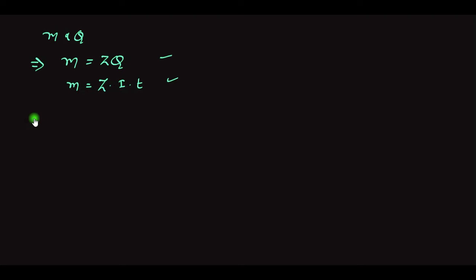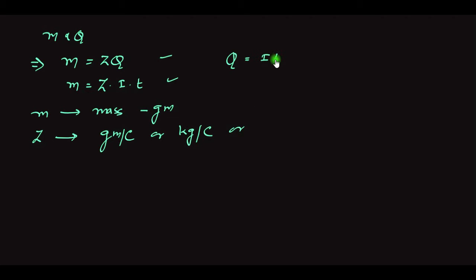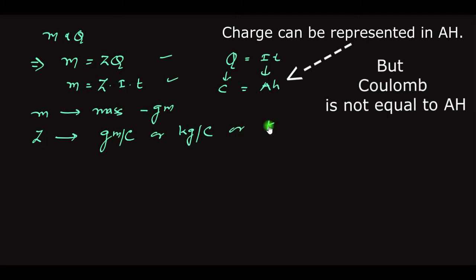We will be provided information like the mass of the substance deposited on the electrode and the electrochemical equivalent. Mass should be in grams; electrochemical equivalent is in grams per coulomb or kilograms per coulomb. In some cases, coulomb is replaced with ampere-hours, since Q = IT, so the unit may be kilogram per ampere-hour.